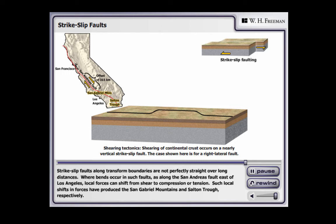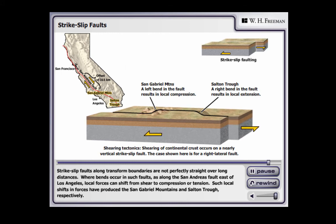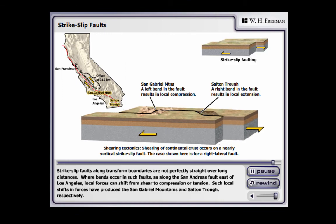Strike-slip faults along transform boundaries are not perfectly straight over long distances. Where bends occur in such faults, as along the San Andreas fault east of Los Angeles, local forces can shift from shear to compression or tension. Such local shifts in forces have produced the San Gabriel Mountains and Sultan Trough respectively.